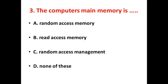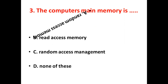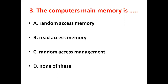Third bit: The computer's main memory is dash. Option A, Random Access Memory. Option B, Read Access Memory. Option C, Random Access Management. Option D, None of these. The answer is Option A, Random Access Memory.